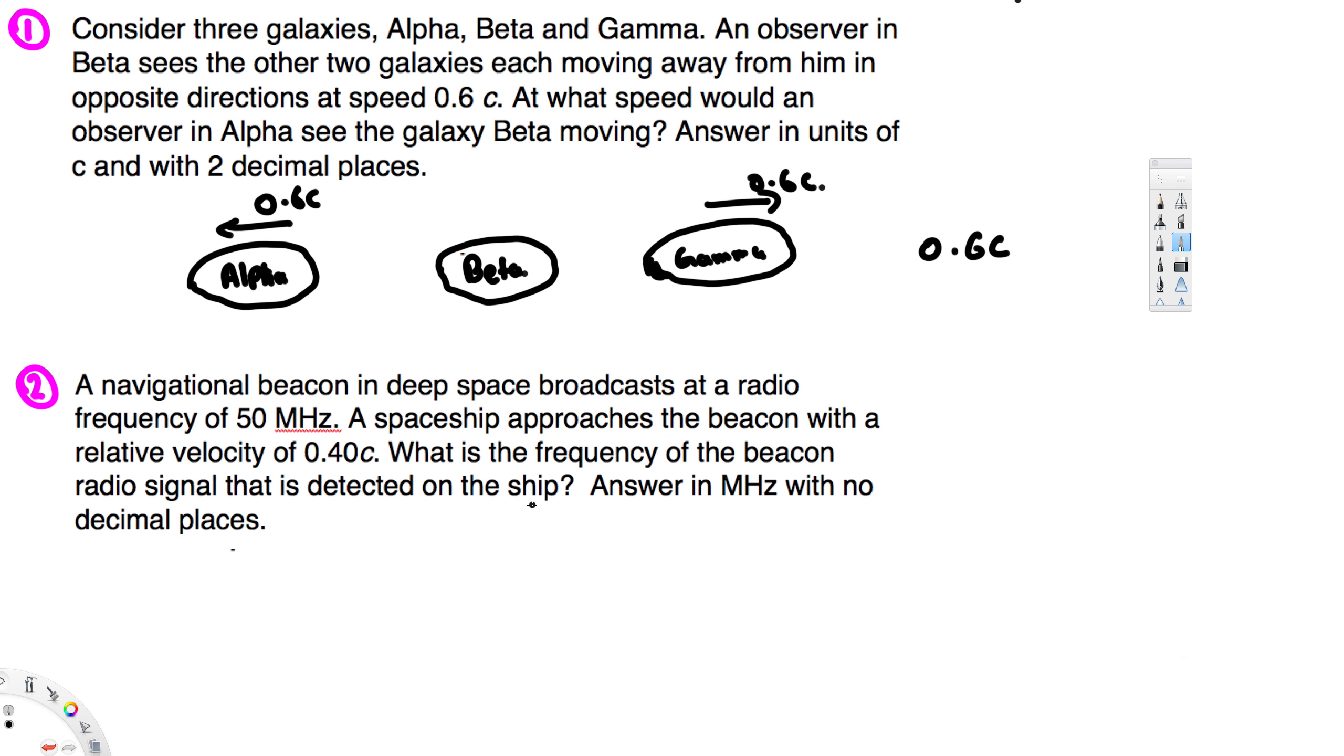Let's see how we can find it. Here we have to choose the expression for relativistic Doppler effects, that is given by: f_observer equals f_0 times the square root of (1 + v/c) over (1 - v/c). Here f_0 is the frequency of the radio signal.